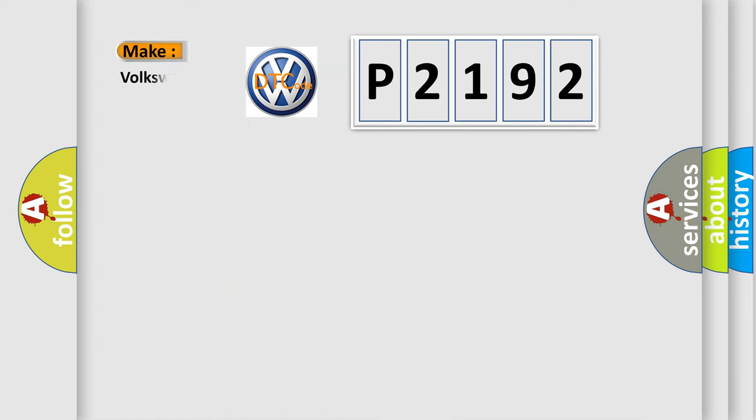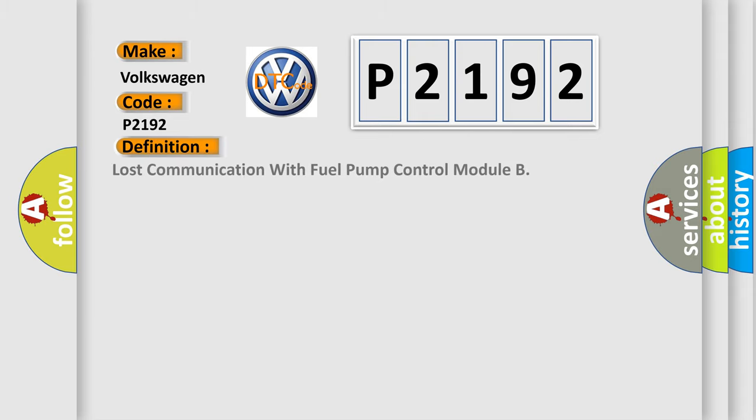So, what does the diagnostic trouble code P2192 interpret specifically for Volkswagen car manufacturers? The basic definition is loss of communication with fuel pump control module. And now this is a short description of this DTC code.